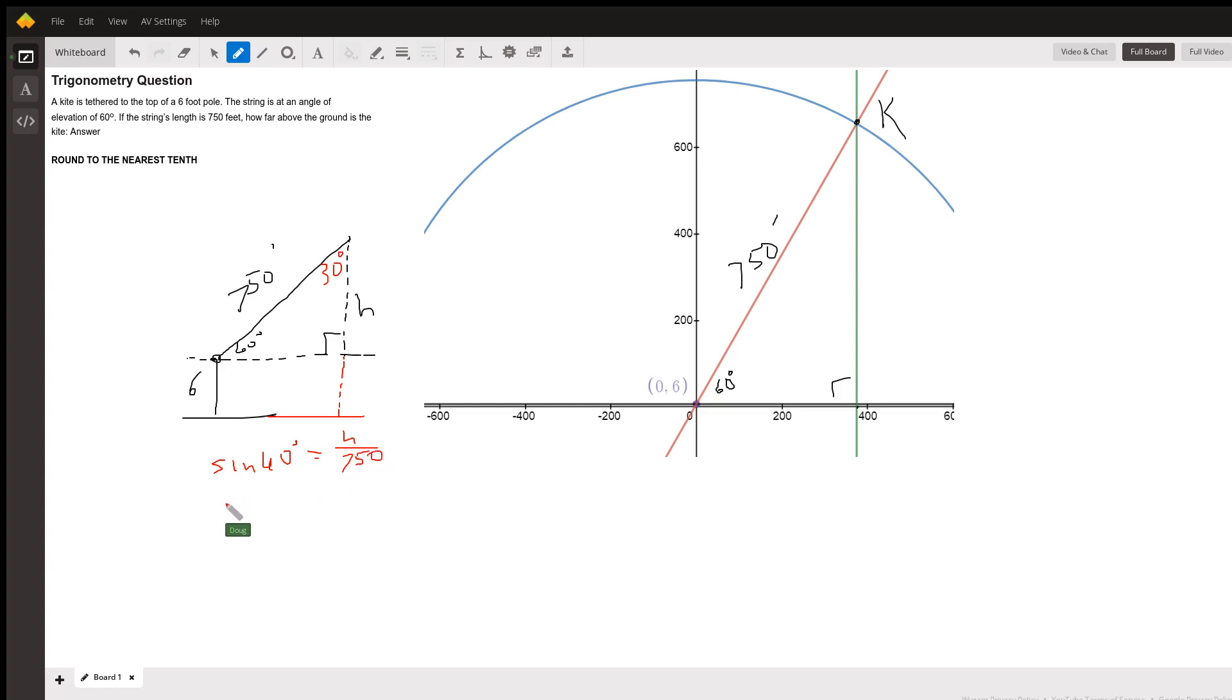So h equals 750 times the sine of 60. The sine of 60 is radical 3 over 2.